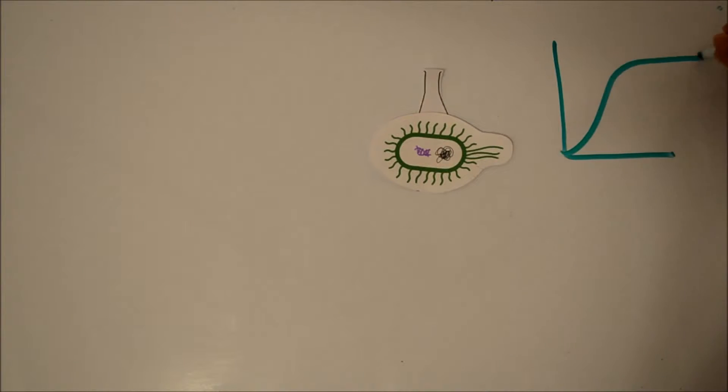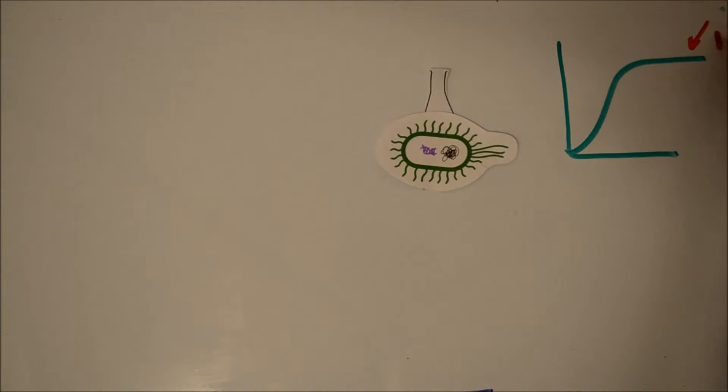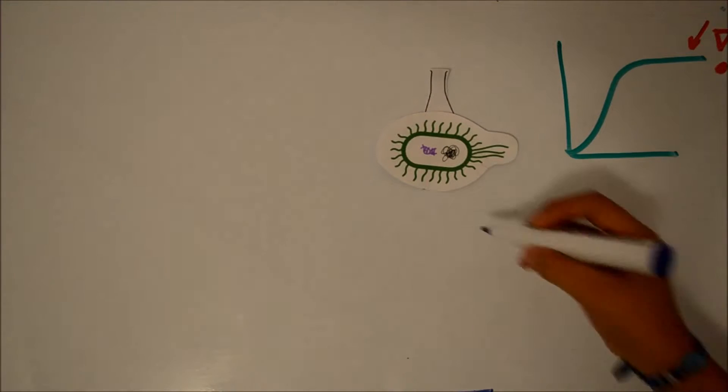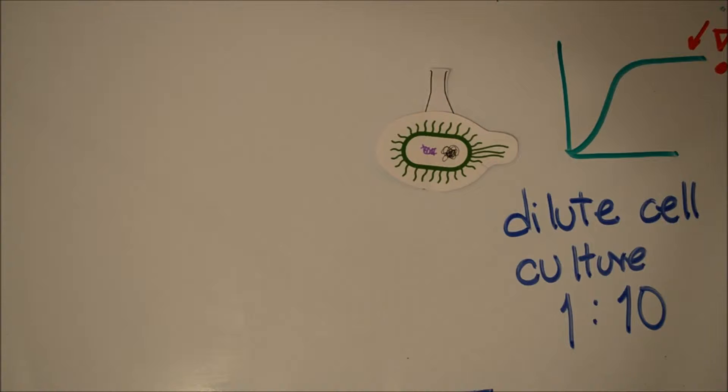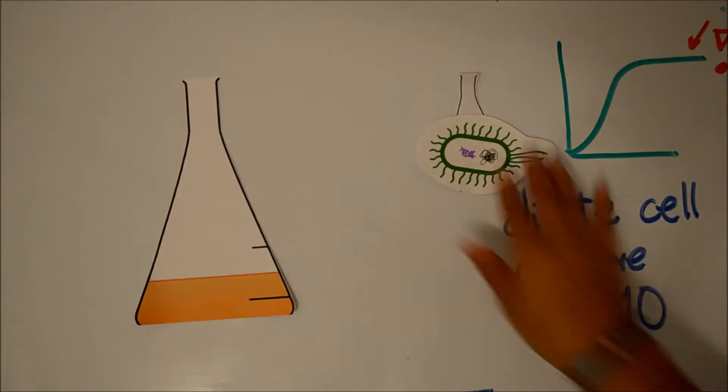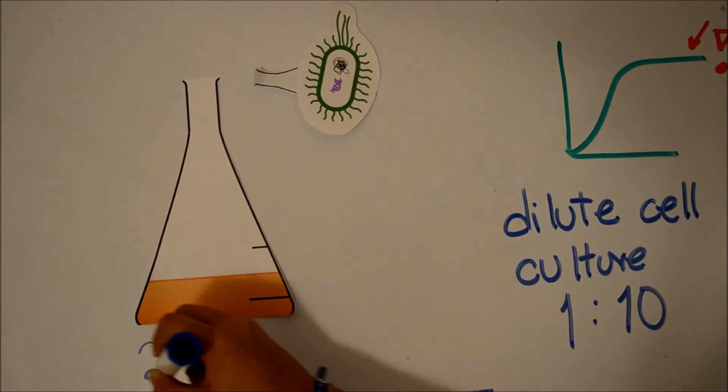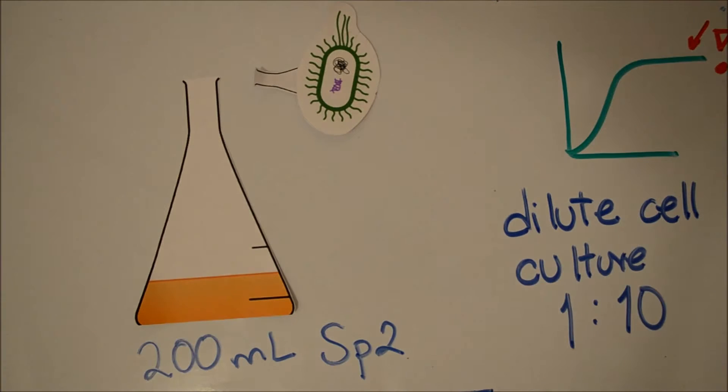Incubate the culture at 37 degrees with vigorous aeration and take periodic OD readings to assess cell growth. Measure every 15 minutes. When the cell growth is seen to depart from exponential, dilute cell culture 1 to 10.